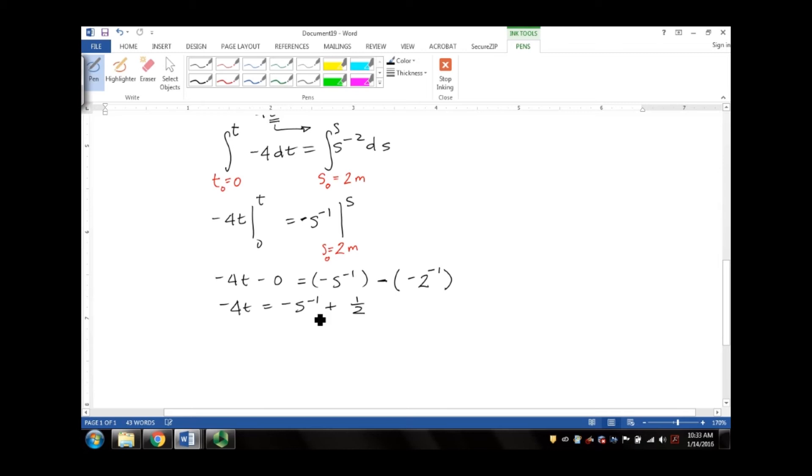Now we can solve for s. We get s equals negative 4t minus one half. That will be negative 1, all divided by negative 1.